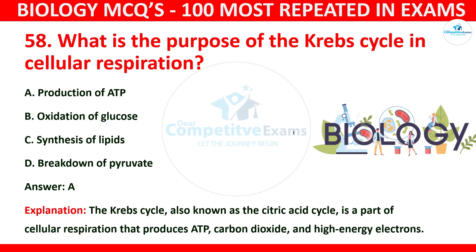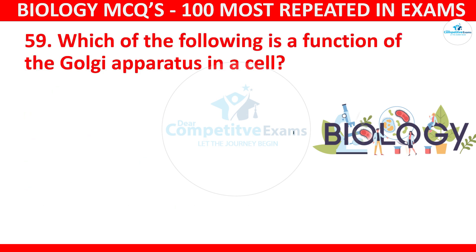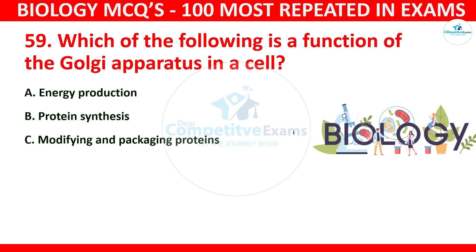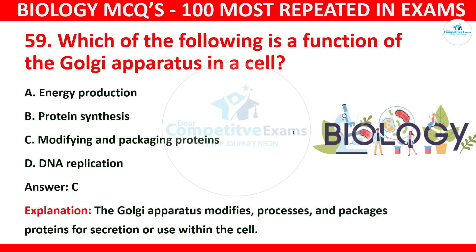Question number 59: Which of the following is the function of the Golgi apparatus in a cell? The options are energy production, protein synthesis, modifying and packaging proteins, or DNA replication. The correct answer is C: modifying and packaging proteins. The Golgi apparatus modifies, processes, and packages proteins for secretion or use within the cell.